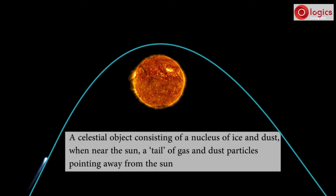We can say a comet is a celestial object consisting of a nucleus of ice and dust. When near the sun, it has a tail of gas and dust particles pointing away from the sun.